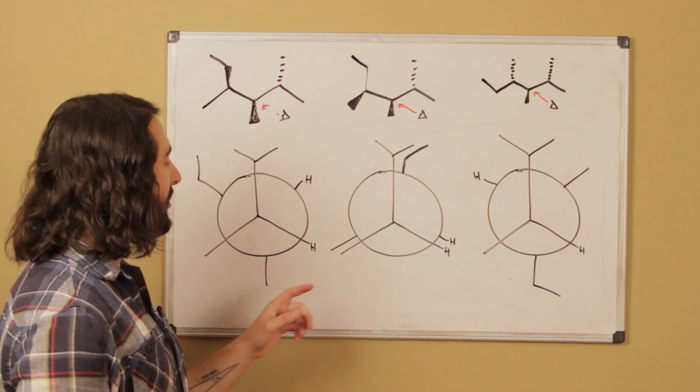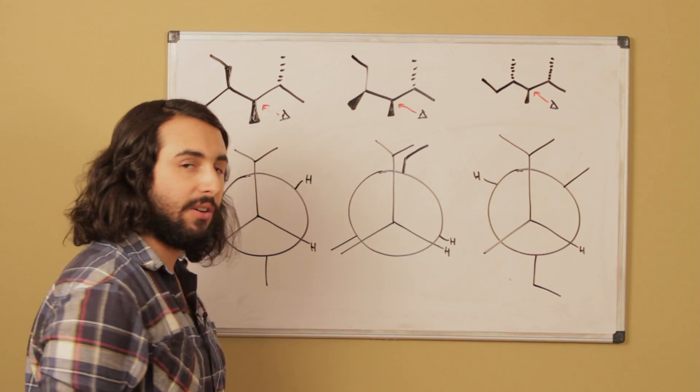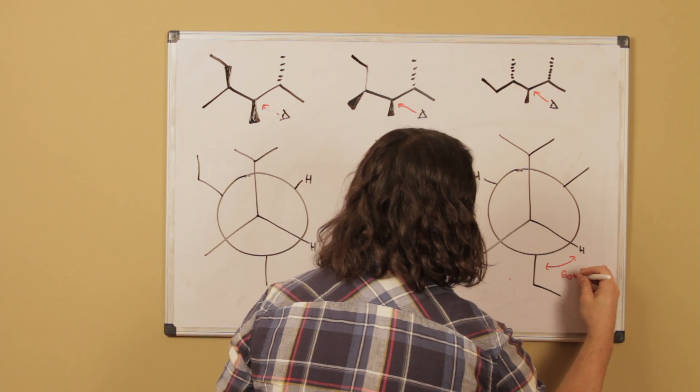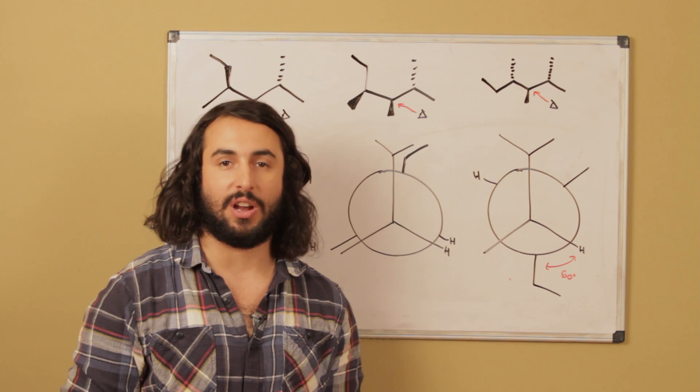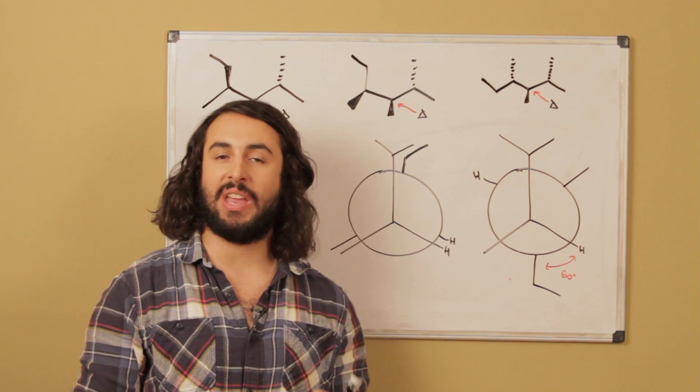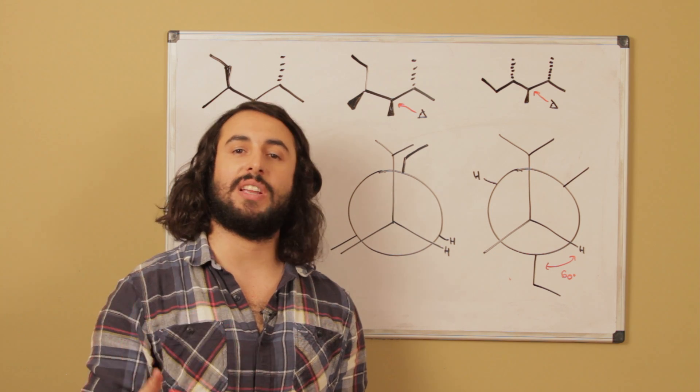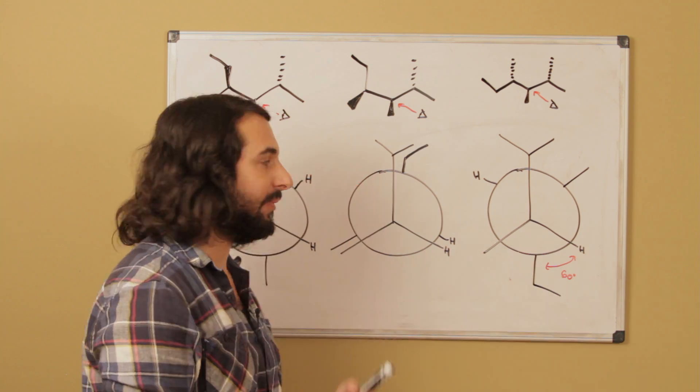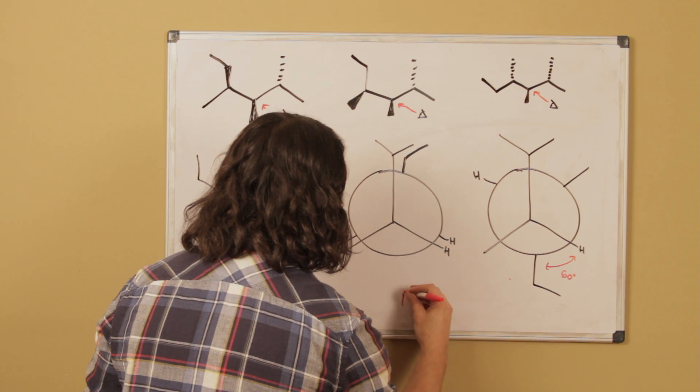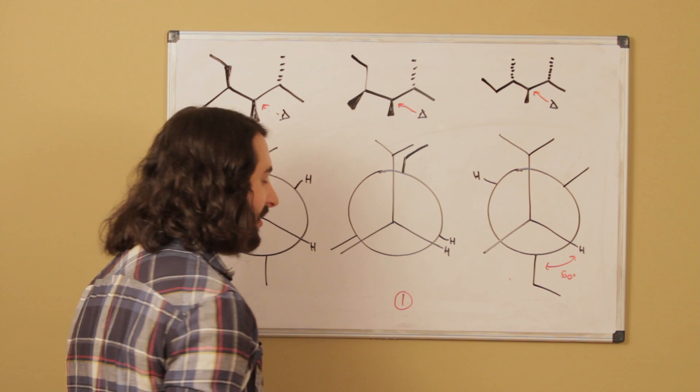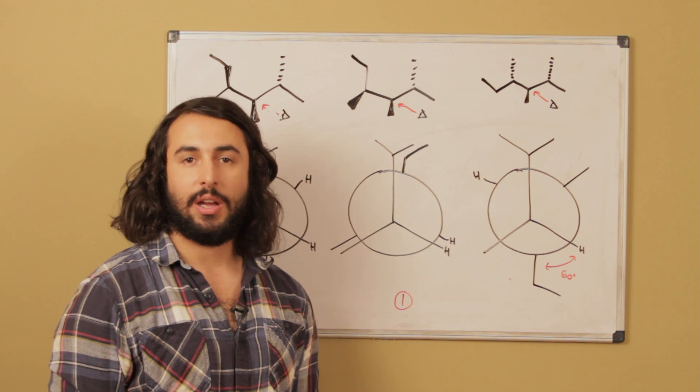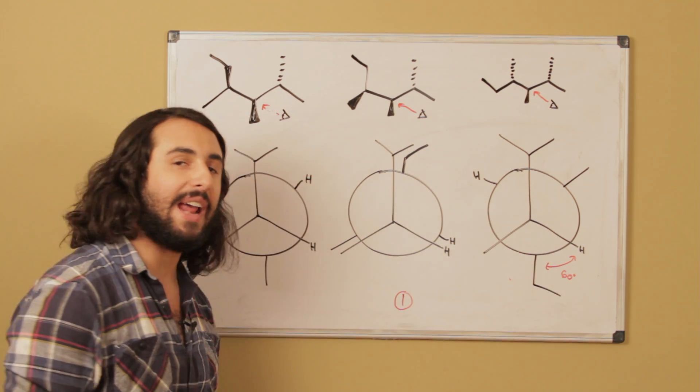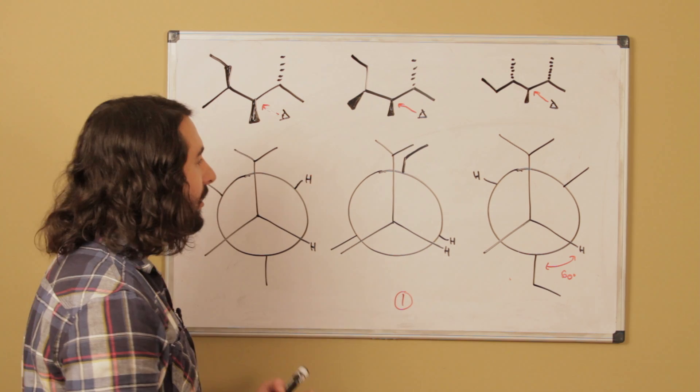So first of all, this one is eclipsed. These two have completely staggered interactions, which have dihedral angles of 60 degrees, and so always all of the staggered conformations are going to be better than any of the eclipsed conformations, because there's so much steric hindrance associated with an eclipsed conformation, because those groups are right on top of each other. So this is certainly the least favorable, energetically speaking. So that's the least favorable, but now let's compare these two staggered conformations and take a look at what's going on.